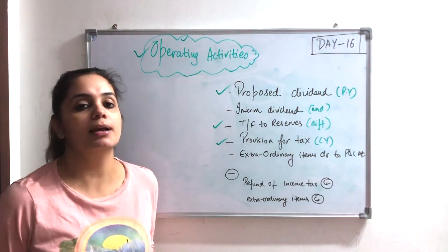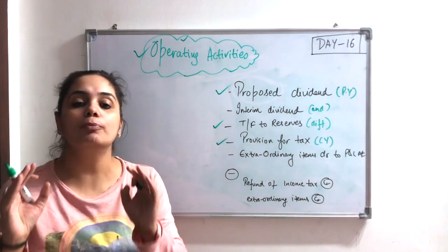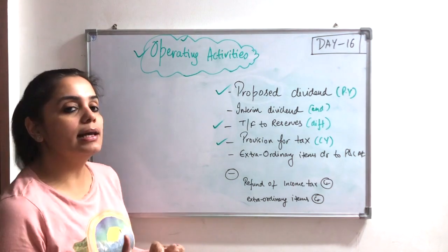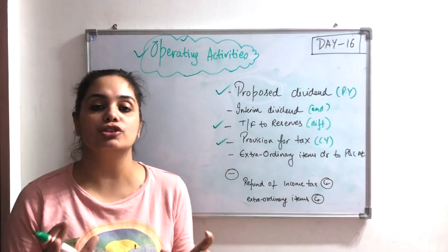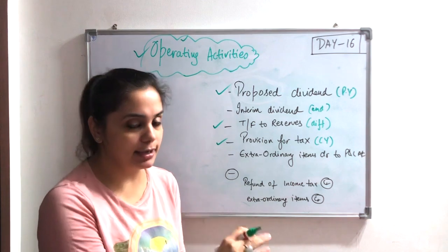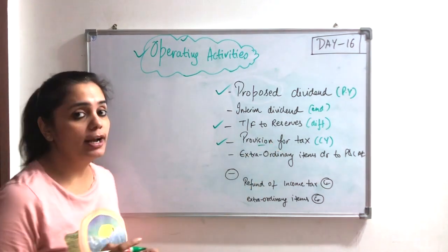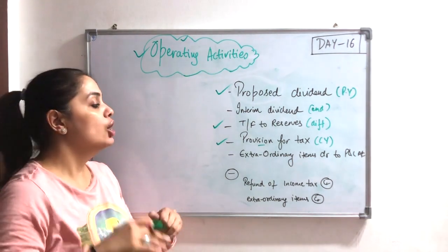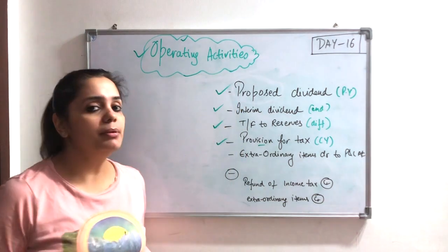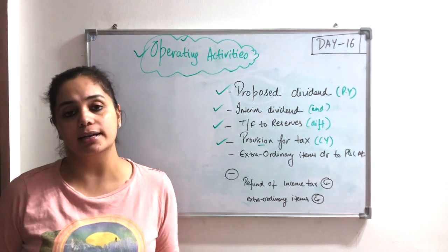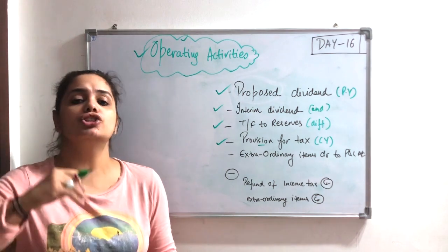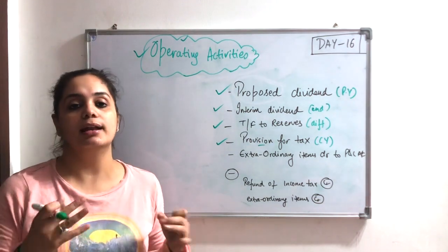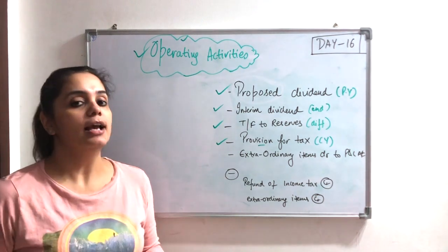I created that provision so that next year, if I have to pay advance tax or pay an amount to the government as tax, I have that provision ready. So if my company earns a lot of profit, I will create a provision for tax and transfer some amount from profit under the heading provision for tax. I can also add an interim dividend, which is a mid-year dividend. If I have more profit, I give shareholders more through an interim dividend. These are all ways I have appropriated my profits.